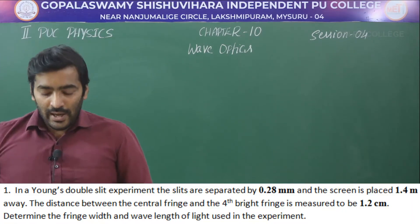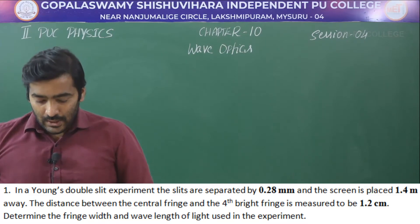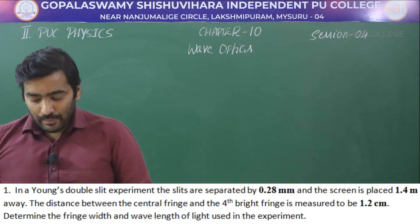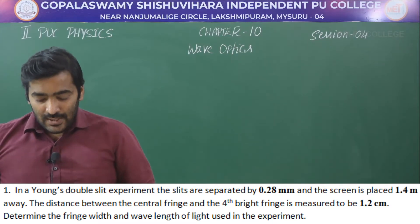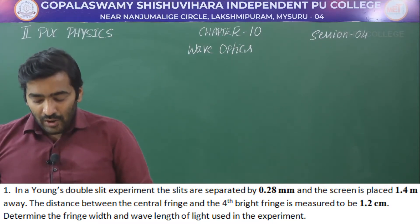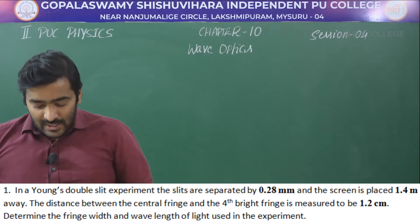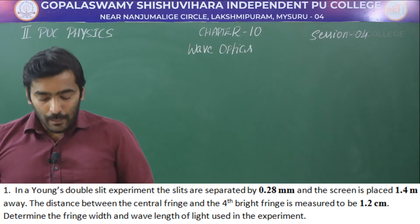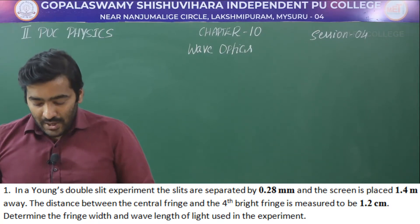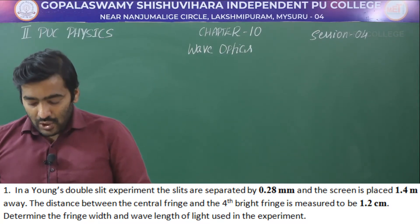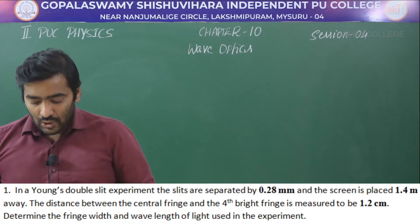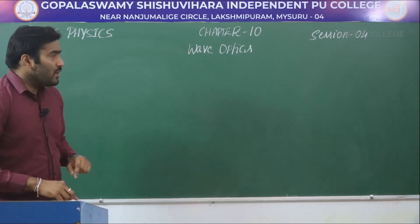The first problem: In a Young's double slit experiment, the slits are separated by 0.28 millimeter and the screen is placed 1.4 meter away. The distance between the central fringe and the 4th bright fringe is measured to be 1.2 centimeter. Determine the fringe width and the wavelength of the light used in the experiment.